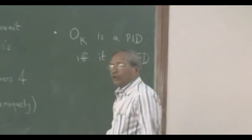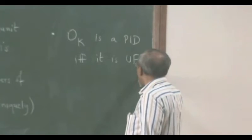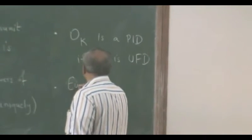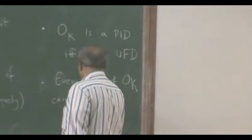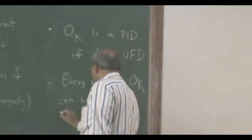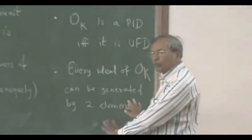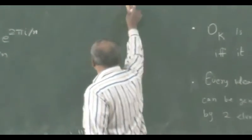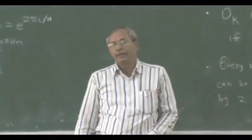There are other nice properties of the ring of integers. O_K is a PID if and only if it is a UFD. This is one important property of O_K. Usually PID implies UFD, but UFD may not imply PID. Here it is true that if you know this is a UFD, it automatically follows that it is a PID. Another interesting fact is that every ideal of O_K can be generated by two elements, so it is very close to being a PID.